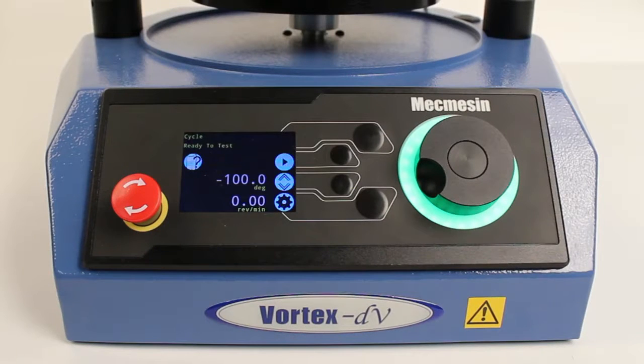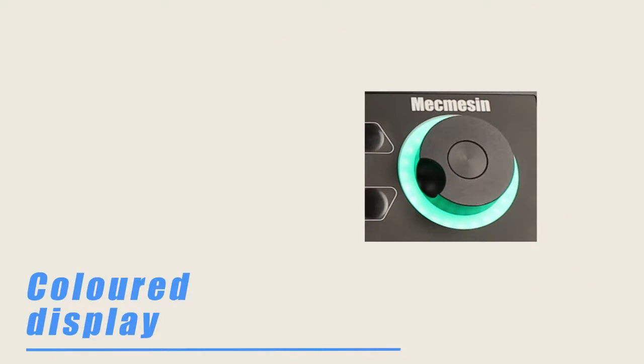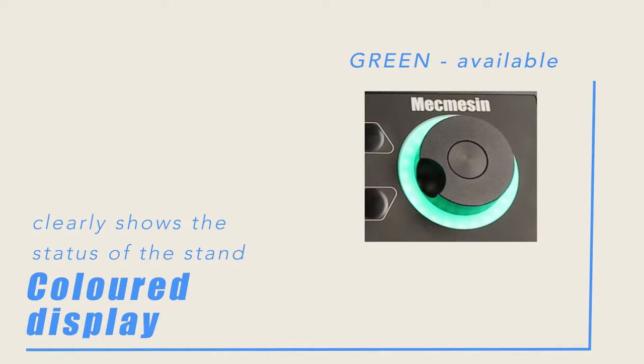The colored display shows clearly the status of the stand: green for available, amber for set up or running, or red for a fault condition.